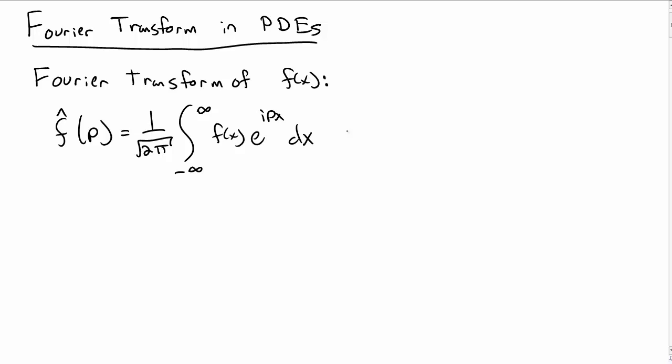Let's consider how to use Fourier transform in partial differential equations. Consider the Fourier transform of some function f of x. We call that Fourier transform f hat, and it depends on p, and it's equal to 1 over the square root of 2π, the integral from negative infinity to infinity of f, e to the ipx dx.